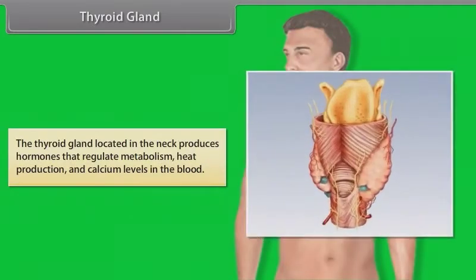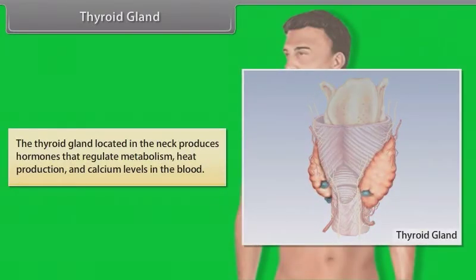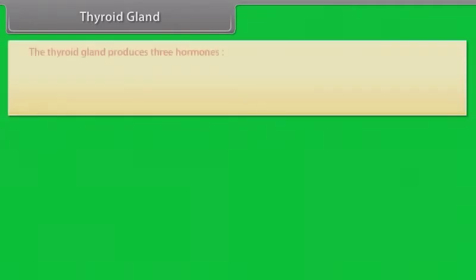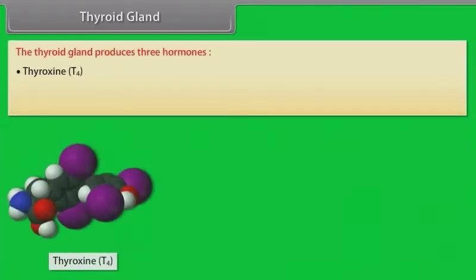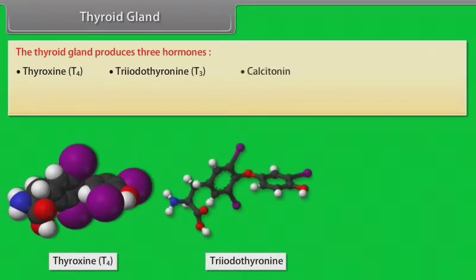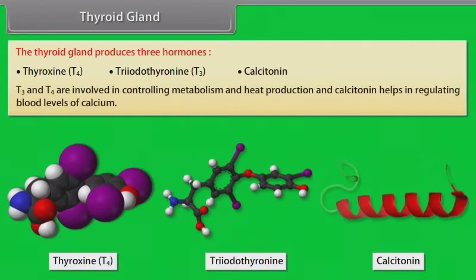The thyroid gland, located in the neck, produces hormones that regulate metabolism, heat production and calcium levels in the blood. The thyroid gland produces three hormones: thyroxin (T4), triiodothyronine (T3), and calcitonin. T3 and T4 are involved in controlling metabolism and heat production, and calcitonin helps in regulating blood levels of calcium.